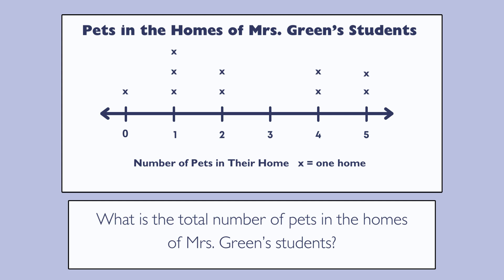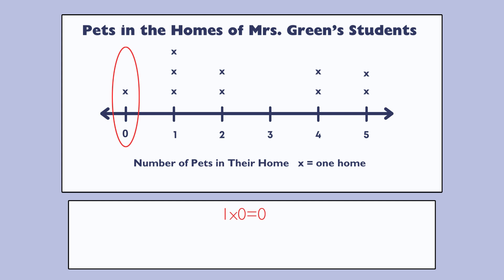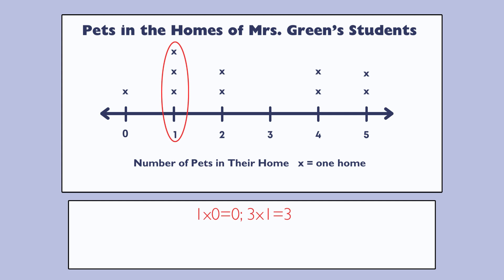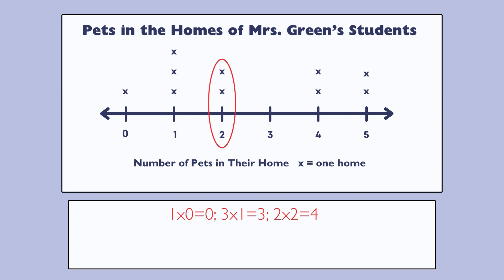What is the total number of pets in the homes of Mrs. Green's students? To find the total number of pets, we'll need to find out how many pets are in each group. We would multiply the number of homes times the number of pets. For example, one home has zero pets and one times zero equals zero. Three homes have one pet and three times one equals three. Two homes have two pets and two times two equals four.